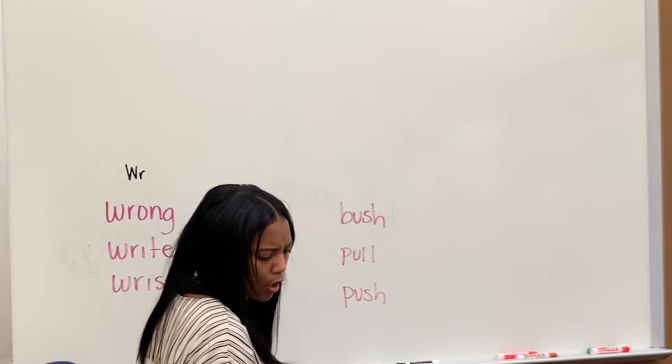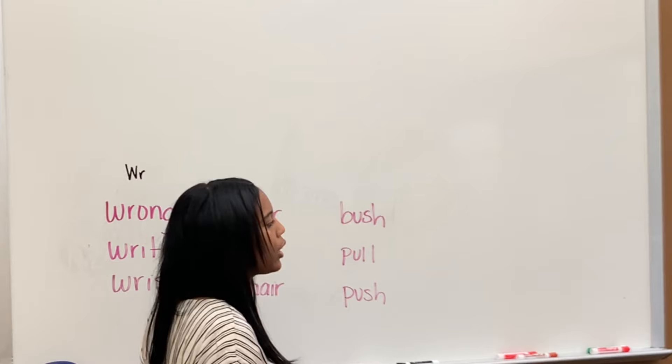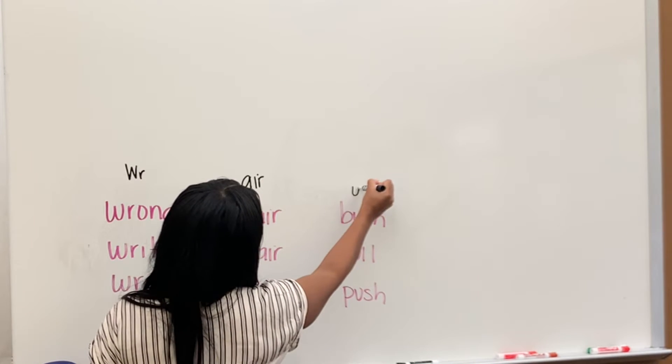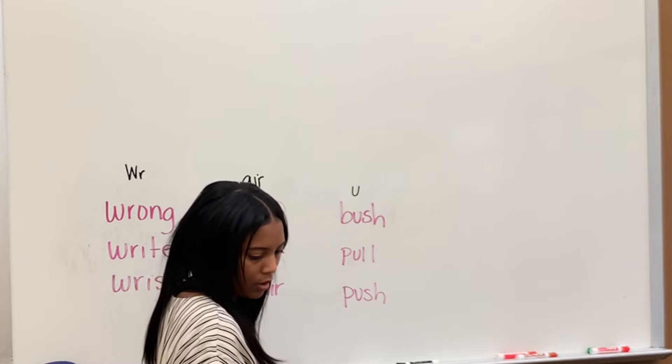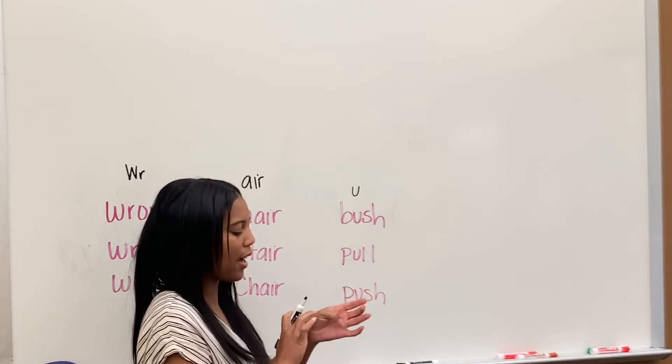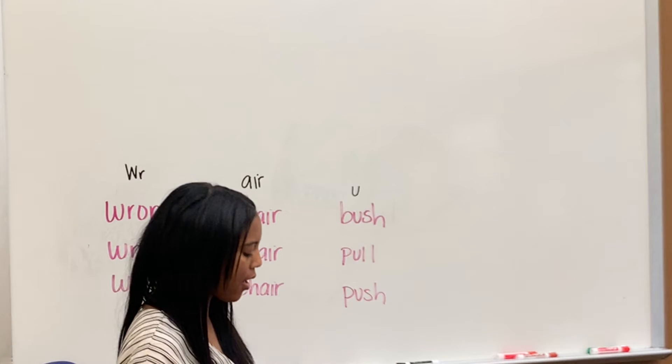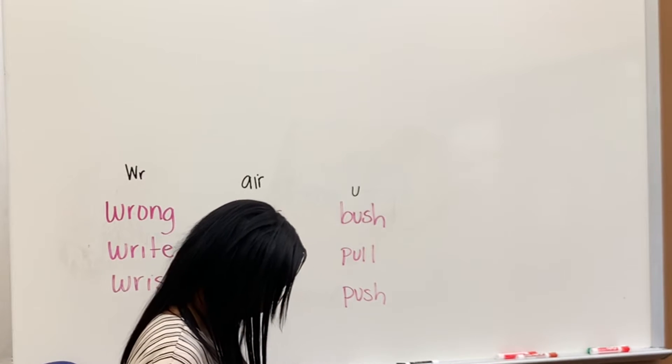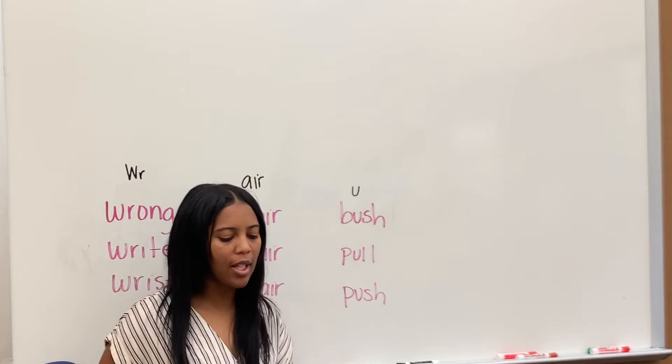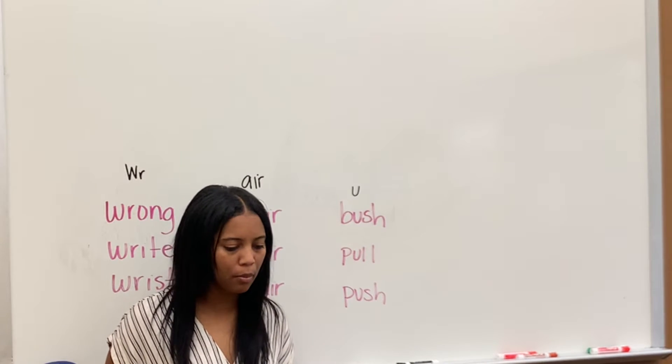OULD says UD, UD, UD and could. AIR says air, air, air and hair. AIR says air, air, air and hair. U says uh, uh, uh and push.